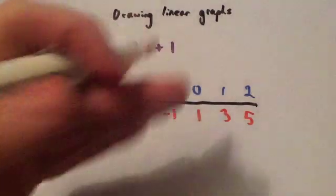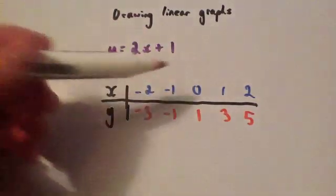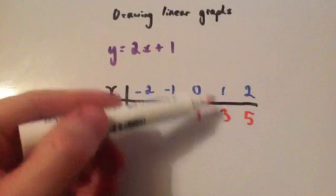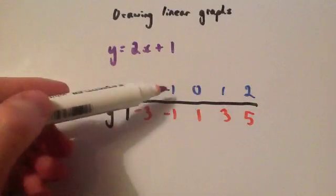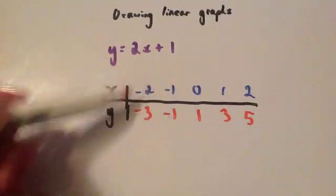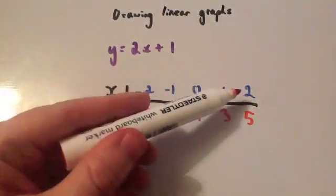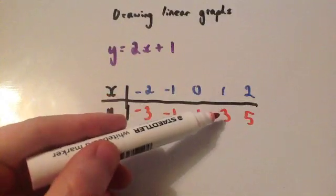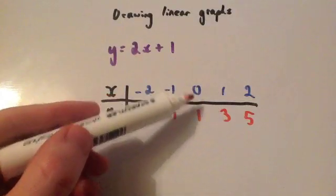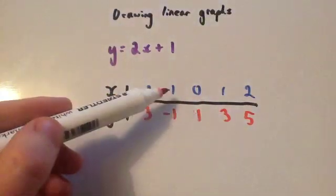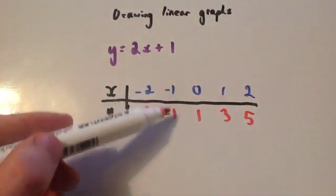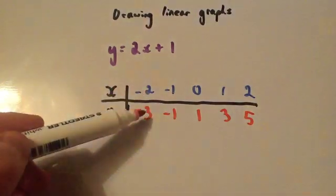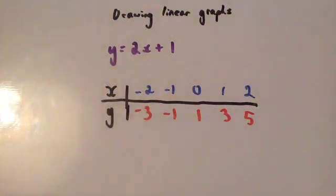These are the coordinates we're going to plot. Each pairing is a coordinate: 2 across 5 up, 1 across 3 up, 0 across 1 up, 1 to the left 1 down, and 2 to the left and 3 down.